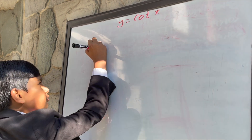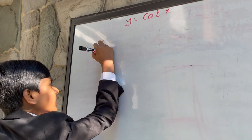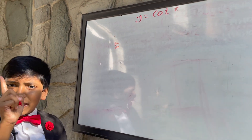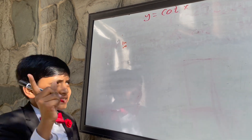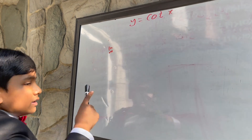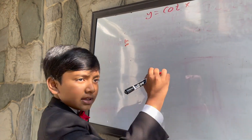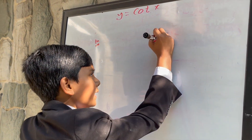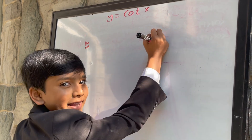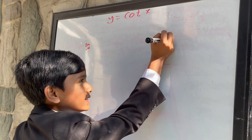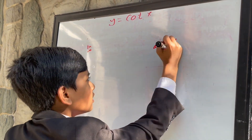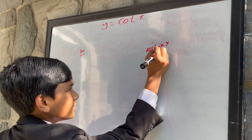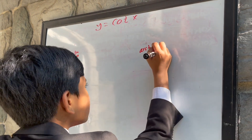Today, we're taking the derivative of cotangent of x. Now you may or may not realize that cotangent of x is 1 over tan of x. And you may or may not realize that this is different from arctan, which is tan to the negative first power.